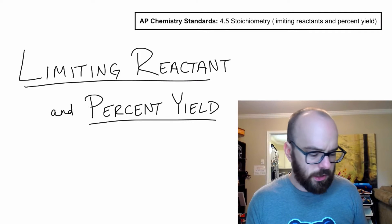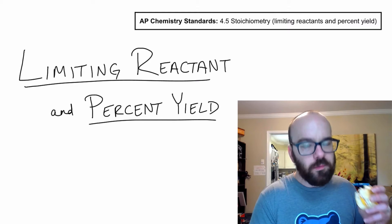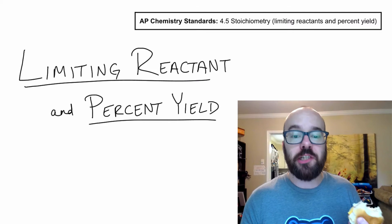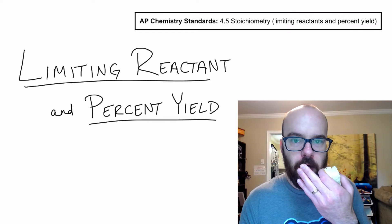You're making sandwiches for a group of people and suddenly you run out of bread. Well, it doesn't matter how much meat and cheese and other toppings you have. If you're out of bread, then that reaction ends or your ability to produce sandwiches is over. We're going to go through a couple examples of limiting reactant and percent yield.